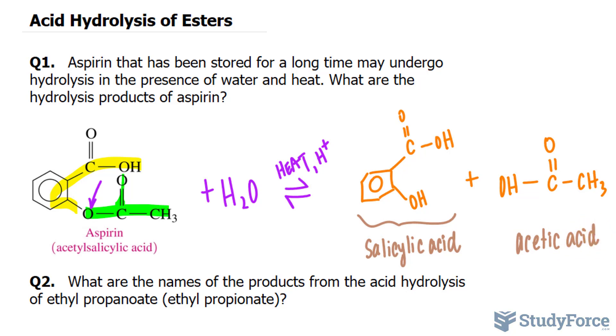Notice that it is a carboxylic acid. We have OH single bonded to carbon, double bonded to oxygen, and we have this methyl here. That's the common name for ethanoic acid.